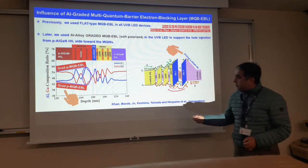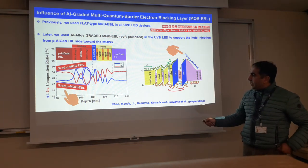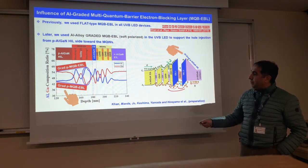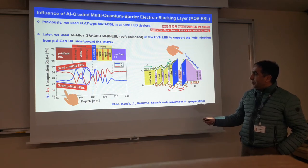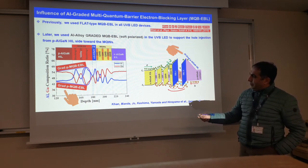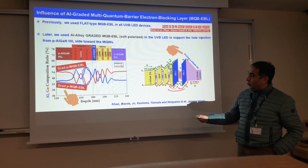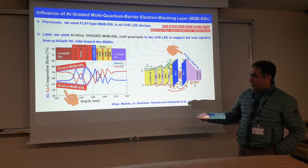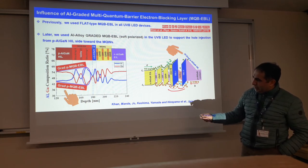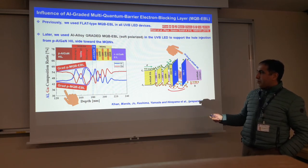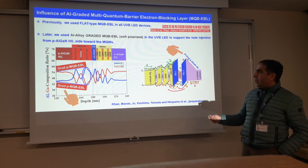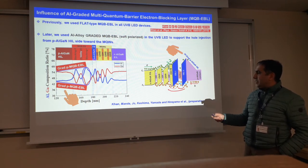Here is the SIMS measurement data of the aluminum and gallium composition. If you look at the electron blocking layer, the first blocking layer's aluminum was the highest, and the second was a little lower. And then subsequently we got this graded blocking layer.